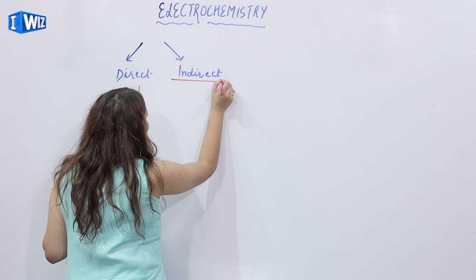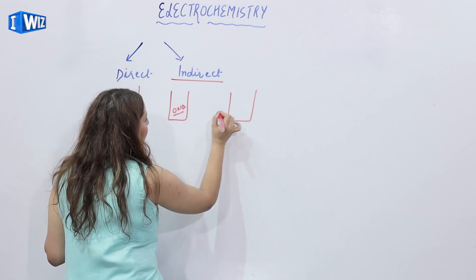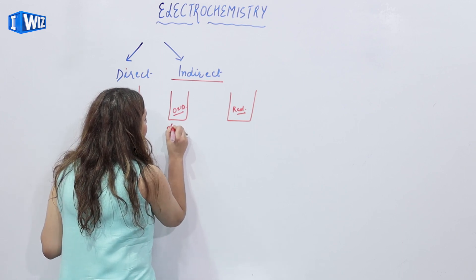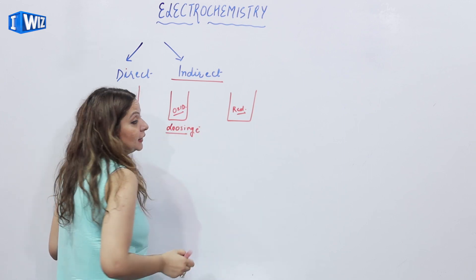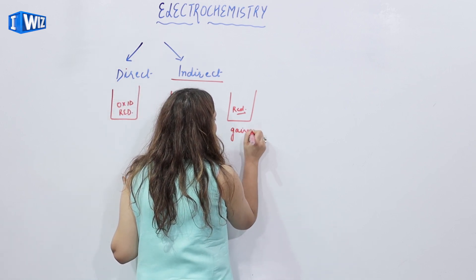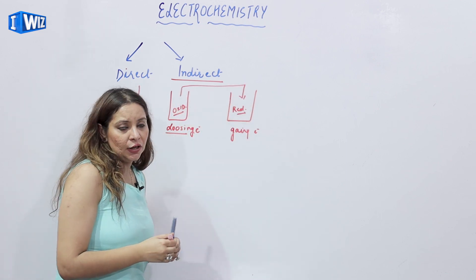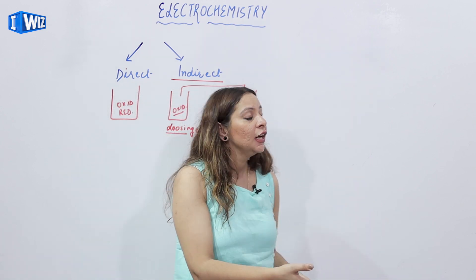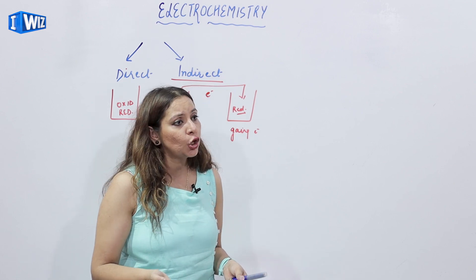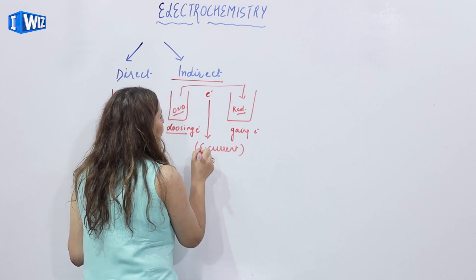In an indirect redox reaction, oxidation and reduction both occur in different beakers. If oxidation is occurring in one beaker, then reduction is occurring in the other beaker. The substance losing electrons is in one beaker and the substance gaining electrons is in the other. So electrons have to travel a certain distance to where they will cause reduction. When they travel that distance, there is a motion of electrons, and we know that movement of electrons gives rise to electric current.